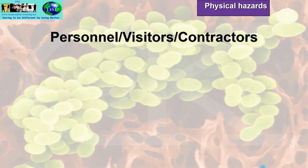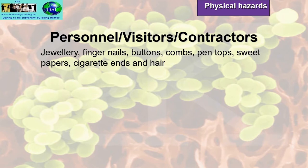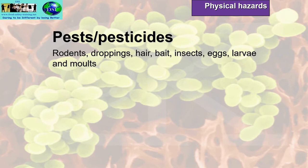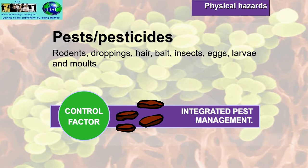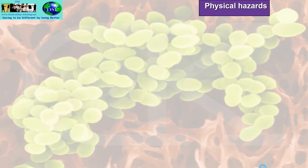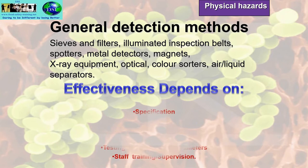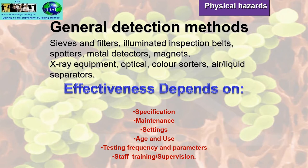From personnel, visitors and contractors, hazards include jewellery, fingernails, buttons, combs, pen tops, sweet wrappers, cigarette ends, hair and tissue — controlled by good personal hygiene. Pests and pesticides introduce rodent droppings, hair, bait, insect eggs, larvae and molts — requiring a good integrated pest management system. General detection methods include sieves, filters, illuminated inspection belts, personal spotters, metal detectors, magnets, x-ray equipment, optical systems, color sorters and air/liquid separators. Effectiveness depends on specification, maintenance, settings, age, test frequency, and staff training.